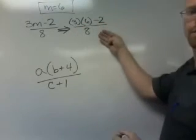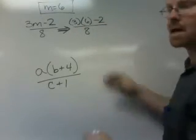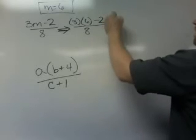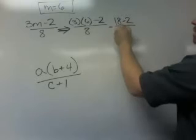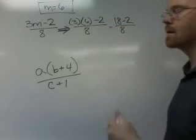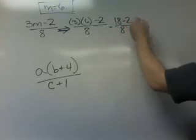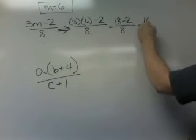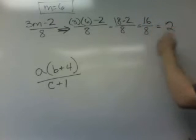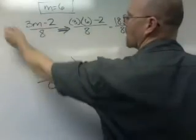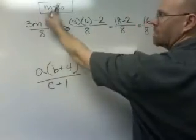So this is 18 minus 2 divided by 8, and 18 minus 2 is equal to 16 divided by 8, and that finally is equal to 2. So if we evaluate this expression for m is equal to 6 we get the answer 2.